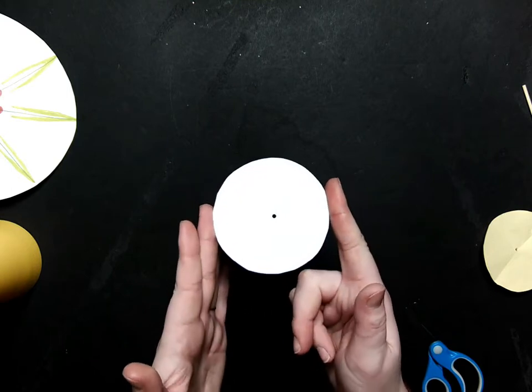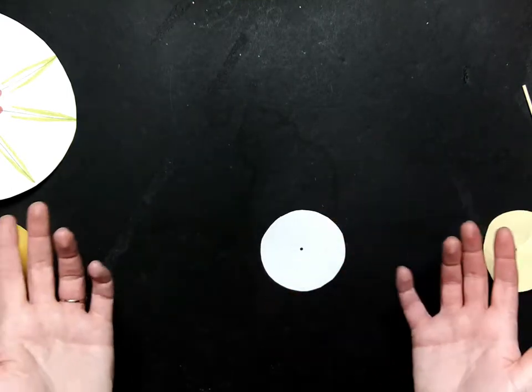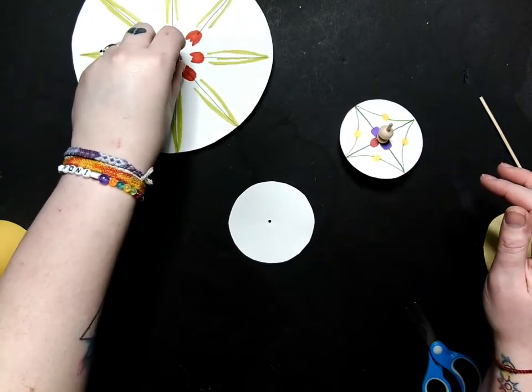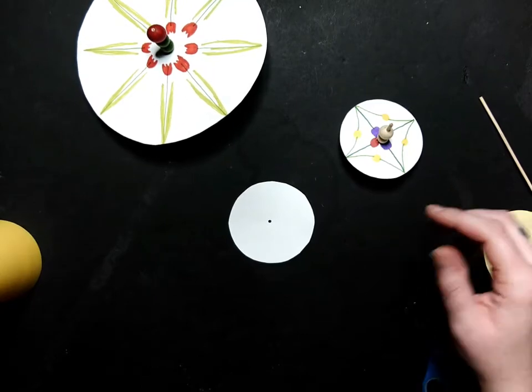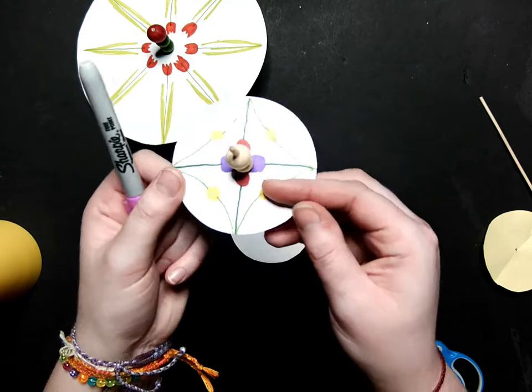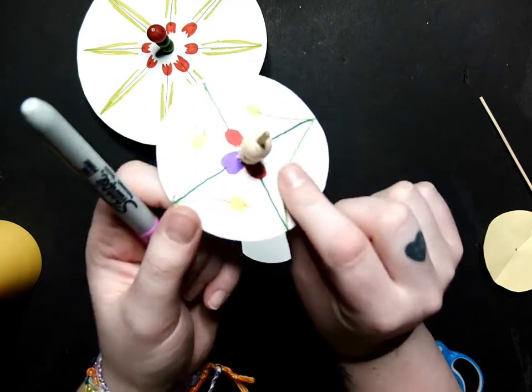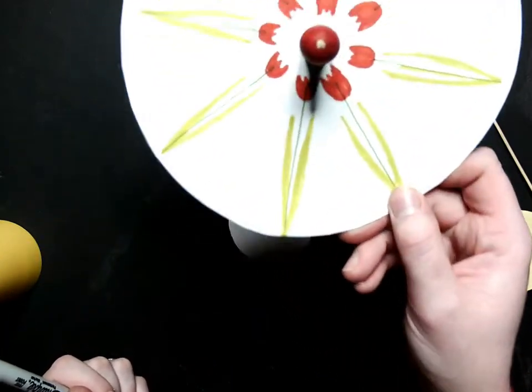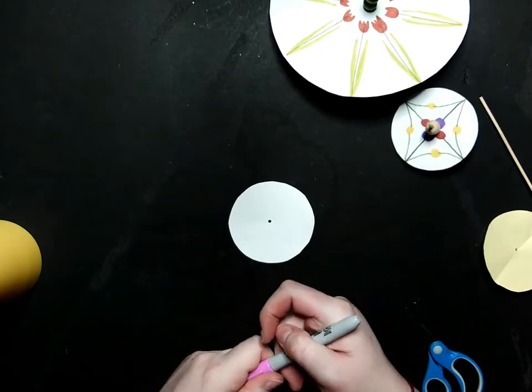Once you have your circle finished like that, you can grab some markers and decorate it any way you'd like. For these ones, I did flowers, and I think I'm going to do the same thing for this one. On this one, I went a little too close to the hole in the middle, so you can't quite tell they're flowers. This one, I left a little bit of room. So you can decorate it however you like.